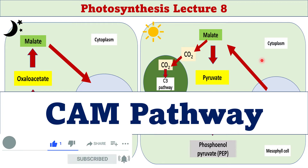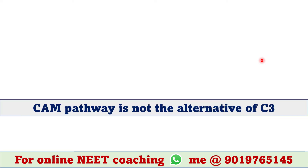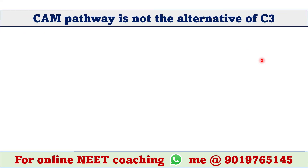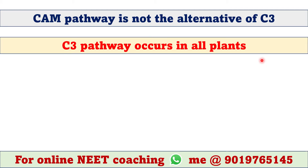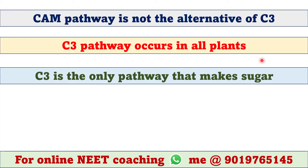First of all, one thing is very important to note: CAM pathway is not the alternative of C3. C3 pathway occurs in all plants, since C3 pathway is the only process that makes sugar during photosynthesis.